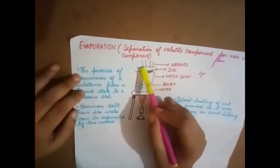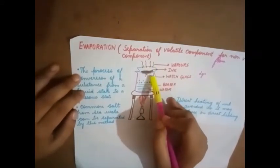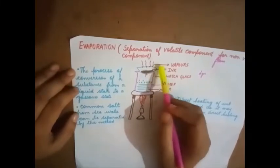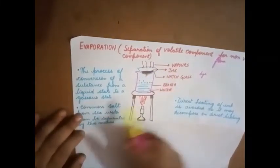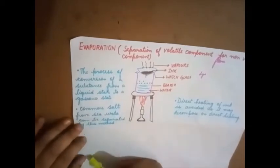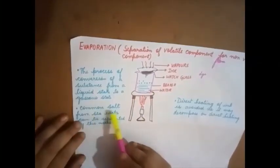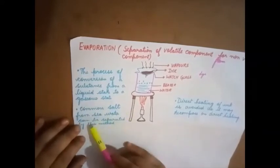The process of conversion of a substance from liquid state to gaseous state is known as evaporation. Here in this ink, the solvent was water. The water got converted from liquid to gaseous state and the dye was left behind.